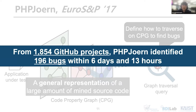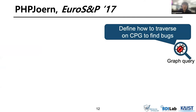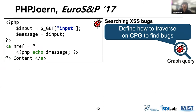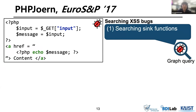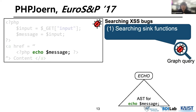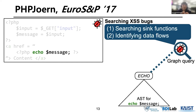With this intuition, PHP found about 200 bugs from about 2,000 GitHub projects. The graph traversal query models how to traverse on CPG. Using this XSS-vulnerable code as an example, I will briefly explain how a query could be composed. It first searches the core node for the sink functions. In the case of an XSS bug, the sink function is 'echo', so traversal starts from the root to the AST node for the echo function. This query then identifies the data flows.